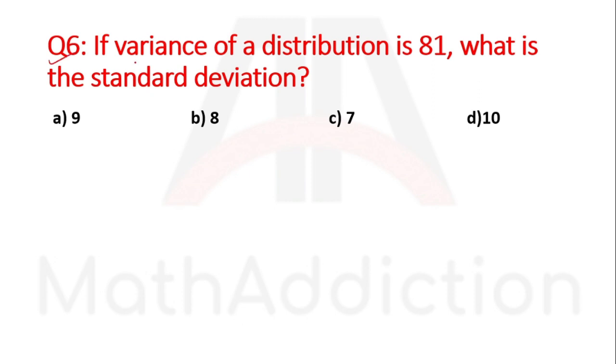Question number six: If variance of a distribution is 81, what is the standard deviation? This is very simple. We just need to remember the relationship between standard deviation and variance.